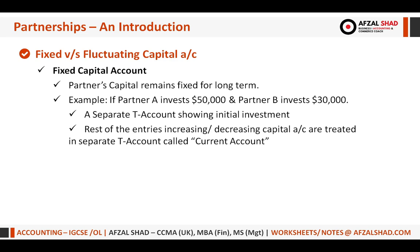When we follow the fixed capital account method, all of these additions and deductions are not going to be part of the capital account. Instead, we create a separate account called the current account. The initial investment remains in the capital account, and the rest of the entries — profit, interest on drawings, interest on capital, partner salaries — all go into the current account.